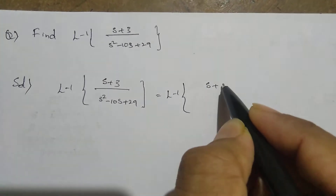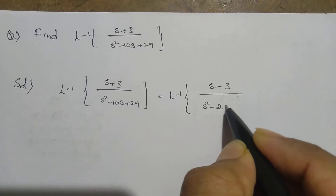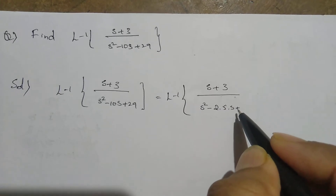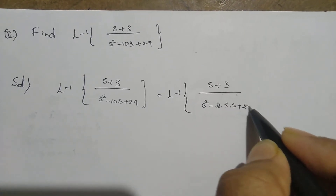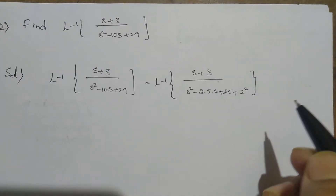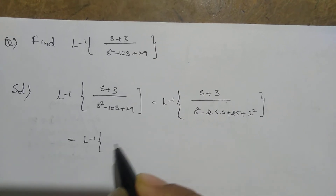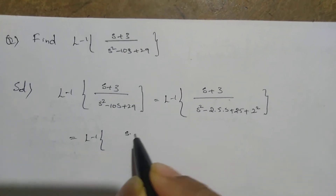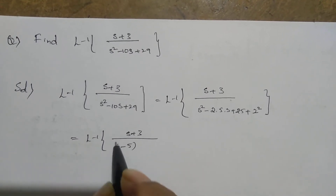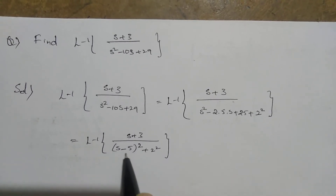Here I want to write (s plus 3) divided by (s squared minus 2 times 5 times s). I want to write it in whole square format. So 5 squared is 25, and I can write that as 2 squared, which gives 4. Then after that, L inverse of (s plus 3) divided by (s minus 5) whole squared plus 2 squared.